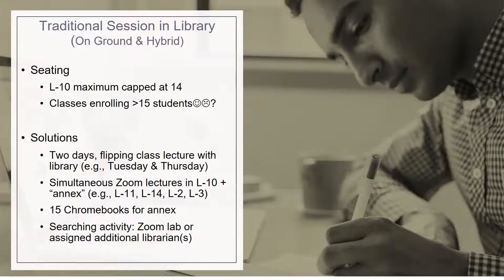One was to have a class visit on two days, flipping class lecture with the library. For example, a class came in with half of its students on Tuesday and the other half on Thursday. It's up to the professor how he or she would like the other day covered—some assigned independent work for the students who were home, others may have recorded something for them to do. That's one solution.